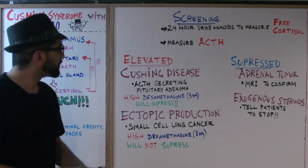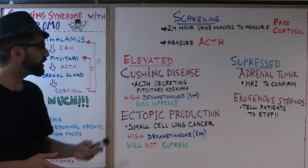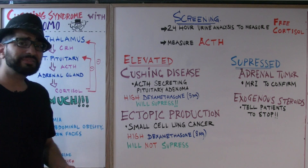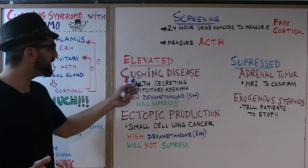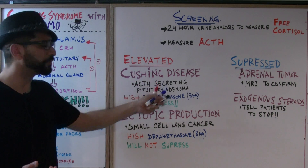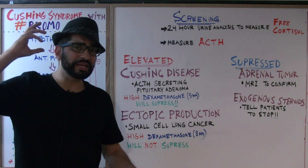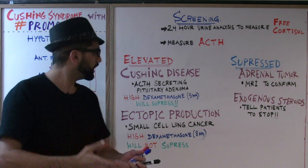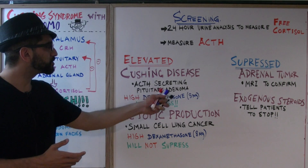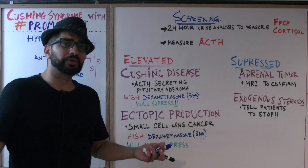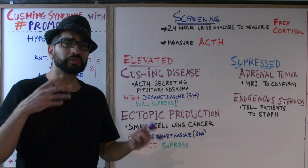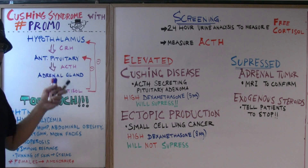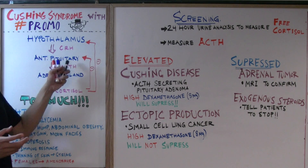If ACTH levels are elevated, the cause is either Cushing's disease or ectopic production. Cushing's disease is an ACTH-secreting pituitary adenoma — the problem is in the anterior pituitary, which releases too much ACTH, which drives the adrenal glands to produce too much cortisol. To differentiate, you give a dexamethasone suppression test. Dexamethasone is an analog of cortisol, meant to inhibit ACTH release from the anterior pituitary.